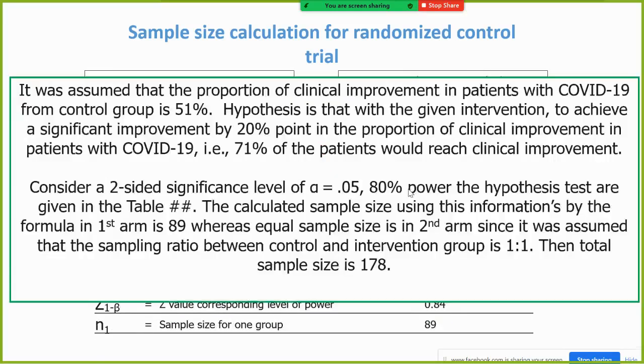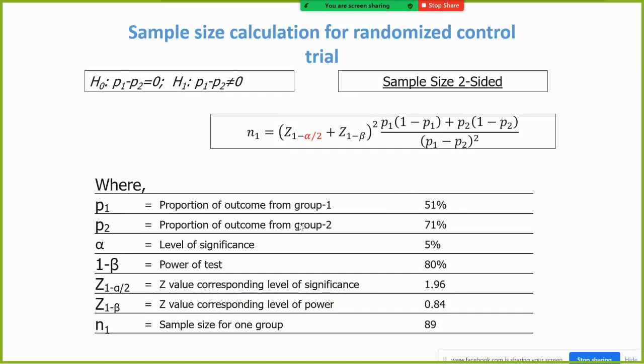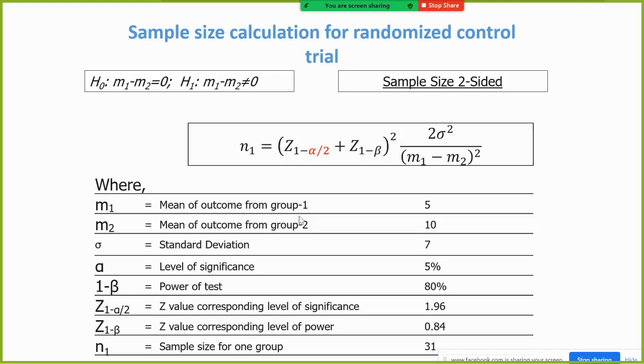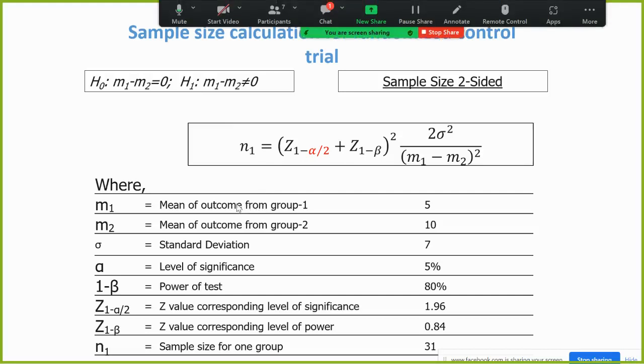Second part means this formula for binary outcome. And now I will describe for continuous, that means if our estimate or outcome is continuous, that means a mean of outcome from group one, mean of outcome from group two. That means the sample size is similar. Before this presentation, already the media display has described the procedure of the continuous outcome.